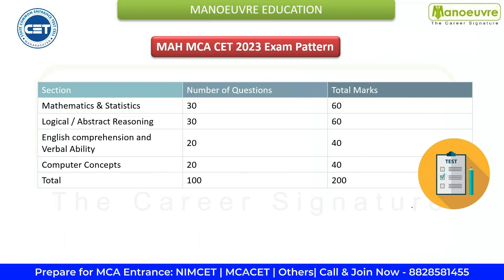The MCA CT exam usually consists of four sections: Mathematics and Statistics, Logical and Abstract Reasoning, English Comprehension and Verbal Ability, and Computer Concepts. Computer Concepts will be covered in the lectures in online or offline class if you have joined a batch. These are the sections in your MCA CT exam pattern.